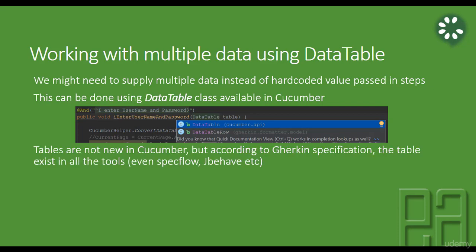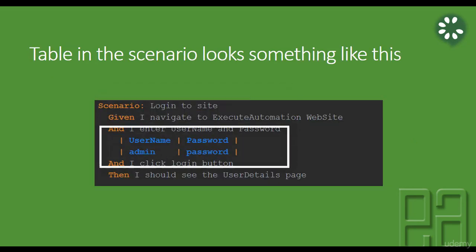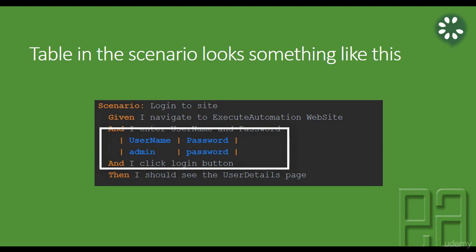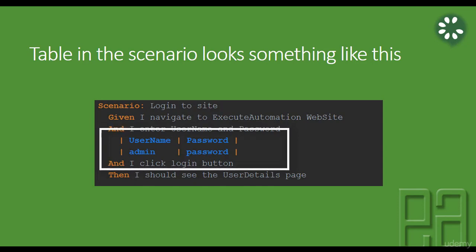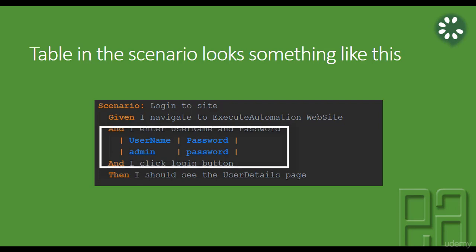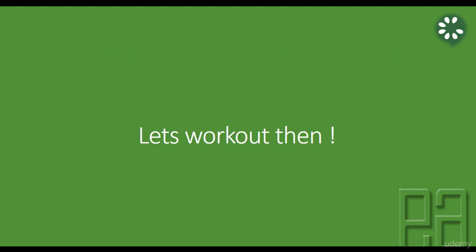Tables are not new in Cucumber - according to the Gherkin specification, tables exist in every tool. Tables in a scenario look something like this: you have a pipe symbol, and the first line of the table - like username and password - is always considered the column name. Following lines are always considered the column values. You can have any number of values beneath each column and any number of rows as well.